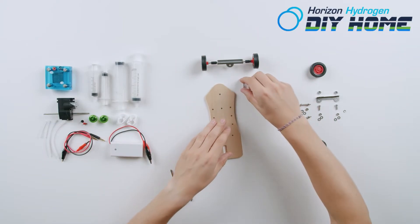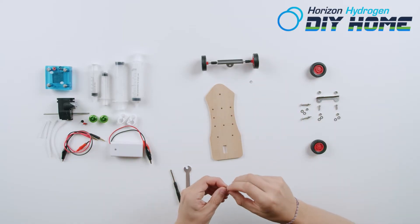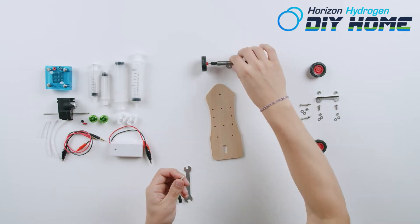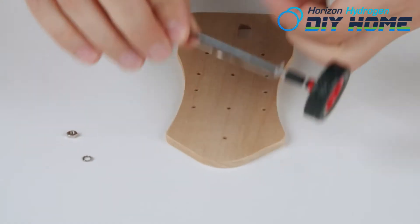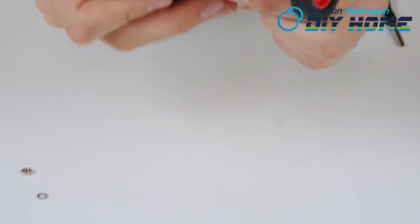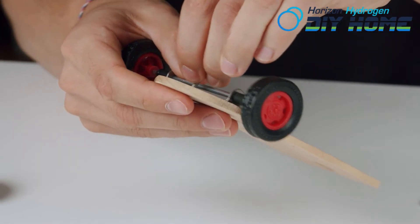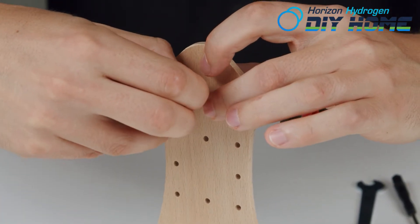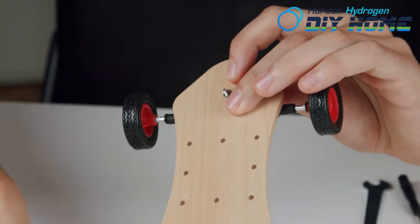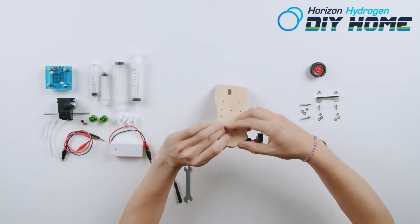Insert one small screw into the front wheel supporter and through the chassis. Insert one metal profiled washer and one small nut onto the small screw. Snugly tighten screw and nut with provided screwdriver and nut driver.